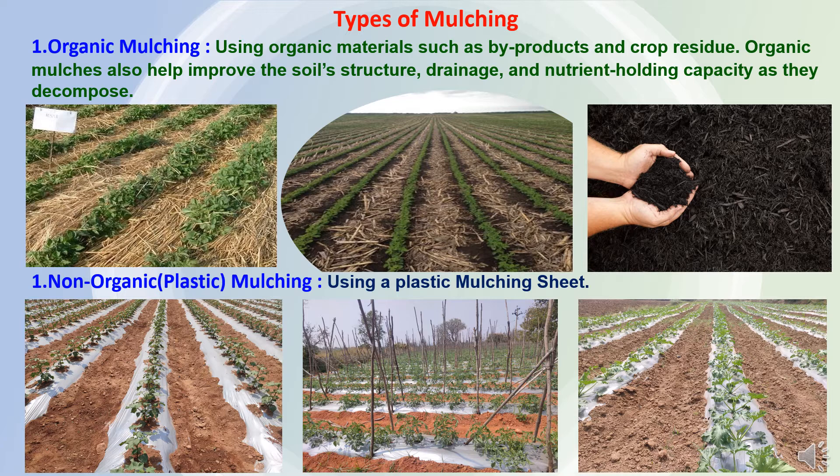In case of organic mulching, there is use of organic materials such as by-products or crop residues of the crops grown in the field. Organic mulches also help to improve the soil structure, drainage, nutrient holding capacity, and water holding capacity of the soil. After decomposition, it improves the nutritive value of the soil and physical soil conditions.